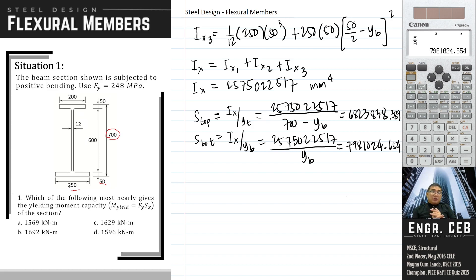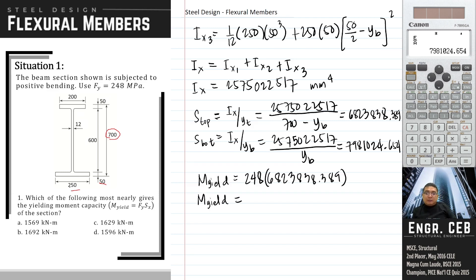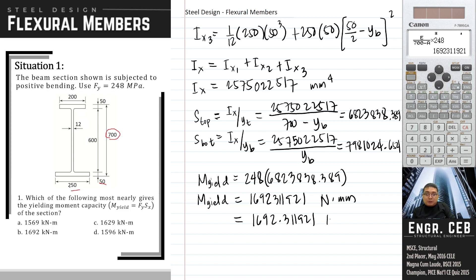To solve for the yield moment capacity, we use the lower section modulus, which is S_top. Multiplying S_top by Fy gives 1,692,311,921 N·mm. The unit is newton-millimeter; dividing by 1,000 squared converts to kilonewton-meters. This is our answer for Problem 1, which corresponds to letter b.